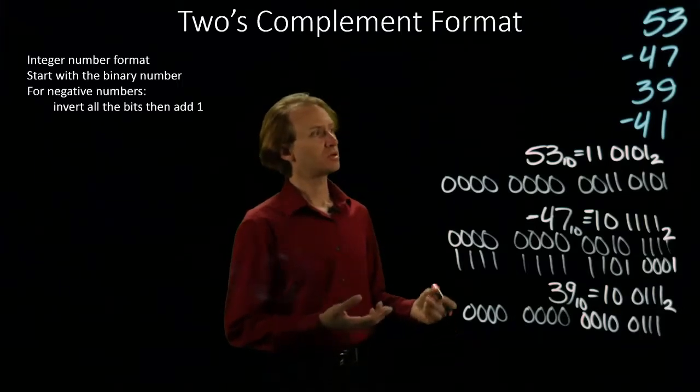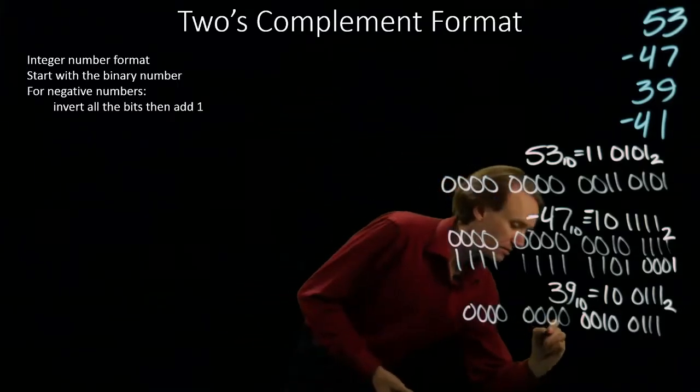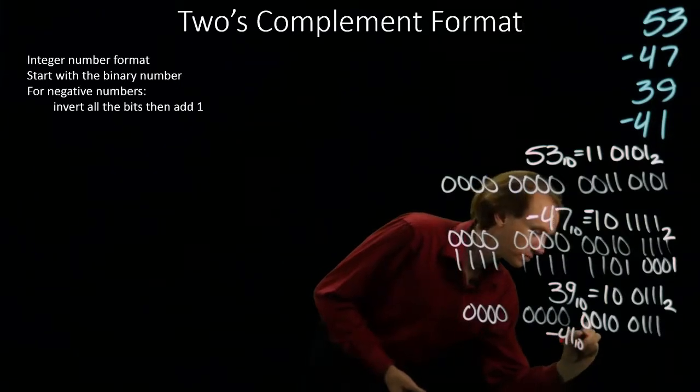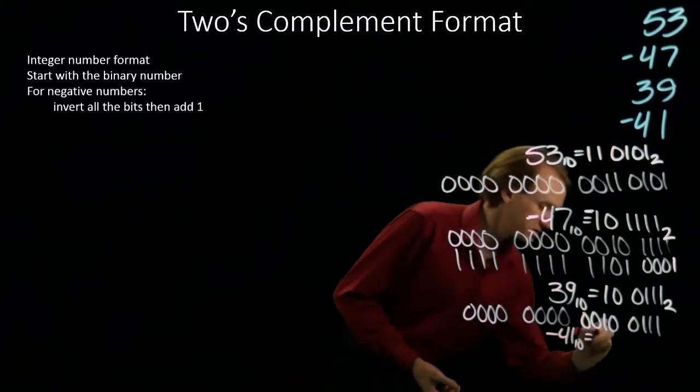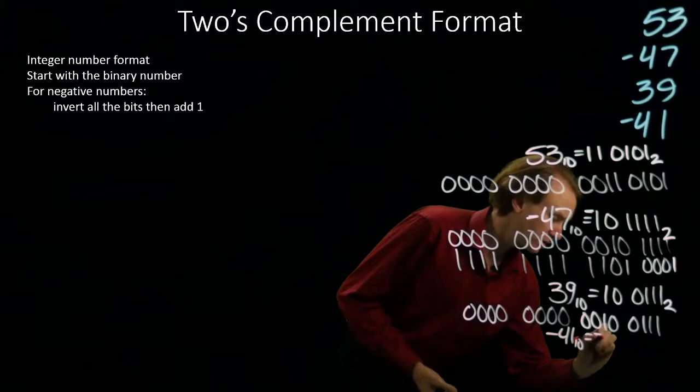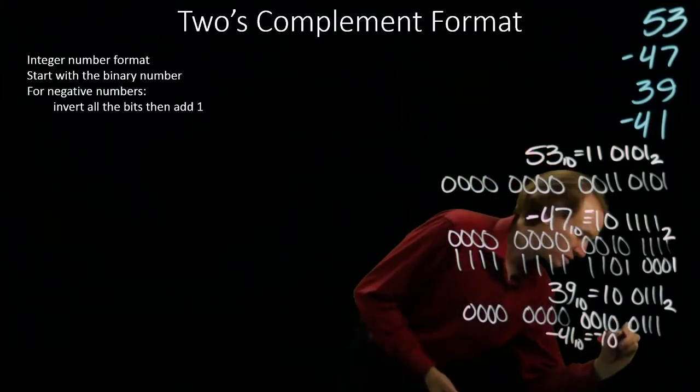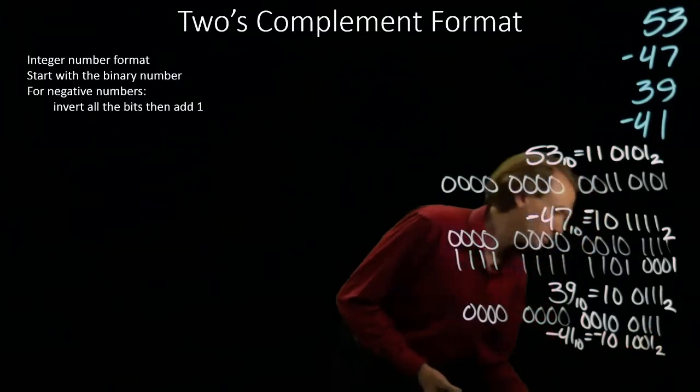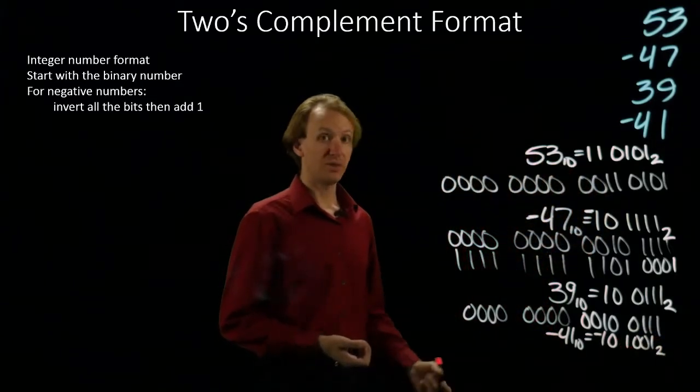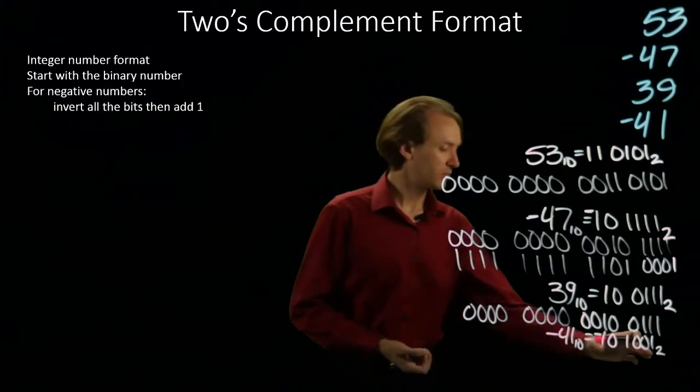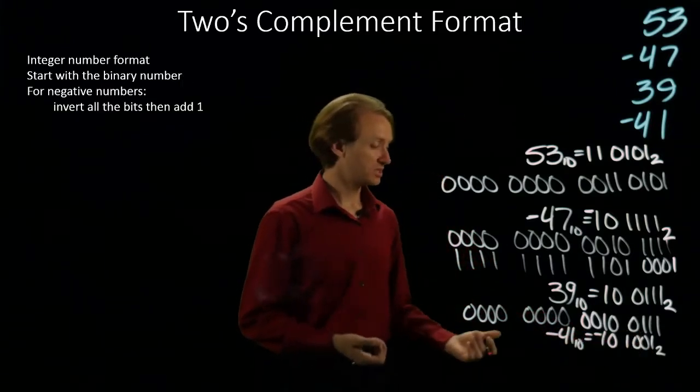My last number is negative 41. In this case, I have a negative number. It's 32 plus 9. So there's 41 in binary. I'll start by writing down my magnitude with 16 bits.